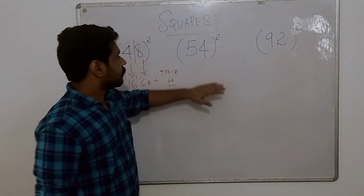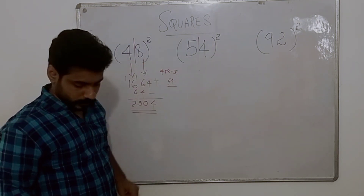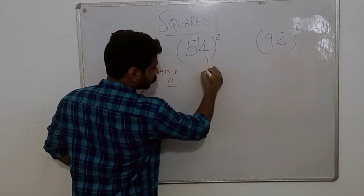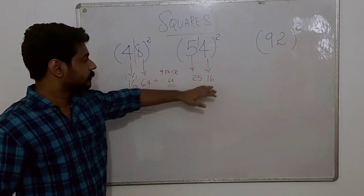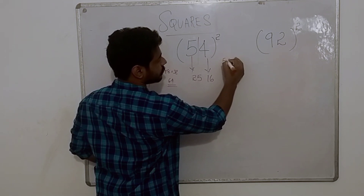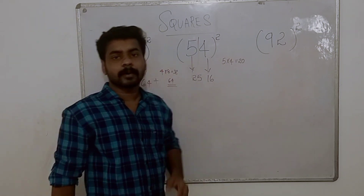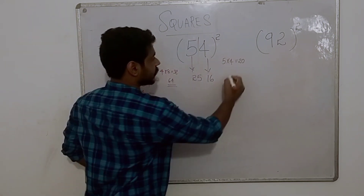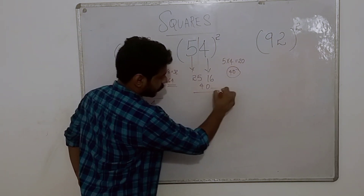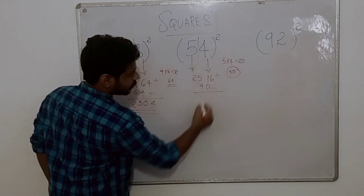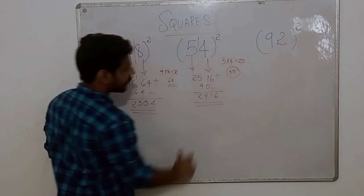Next number: 54 squared. We write it equal to 2 parts. And then we're going to add this number: 6 plus 0 is 6, 1 plus 0 is 1, 5 plus 4 is 9, 2 plus 0 is 2. So we get 2916.